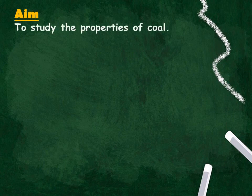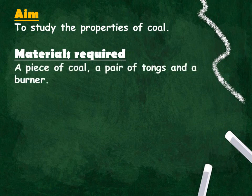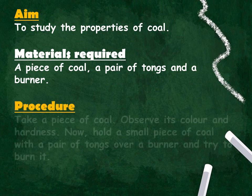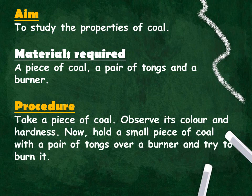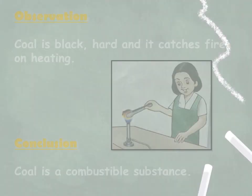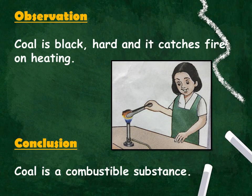Let us perform an activity from page number 71 of your textbook. Aim: to study the properties of coal. For this activity you will require a piece of coal, a pair of tongs and a burner. Take a piece of coal and observe its colour and hardness. Now hold a small piece of coal with a pair of tongs over a burner and try to burn it. You will observe that coal is black and hard. It also catches fire on heating. From this activity we can conclude that coal is a combustible substance.